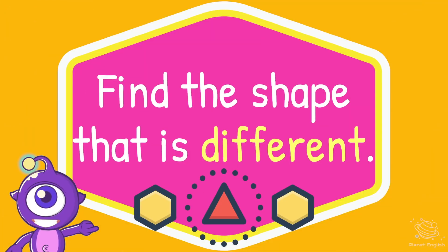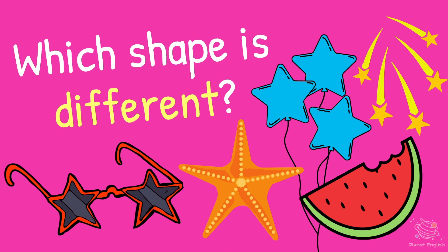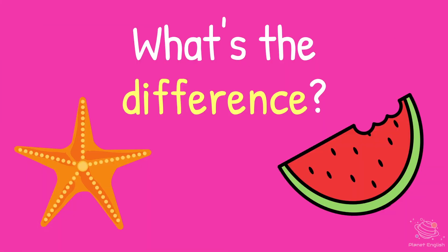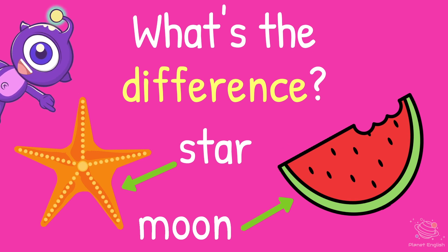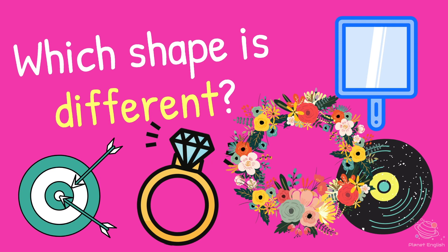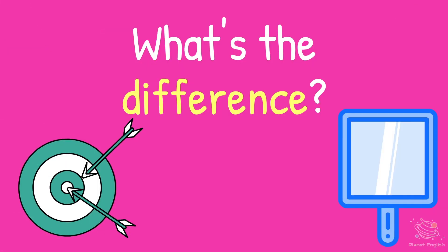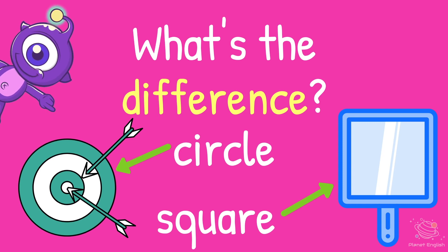Now find the shape that is different. Which shape is different? What's the difference? There is a star and a moon shape. There is a circle and a square.